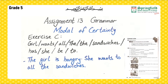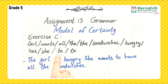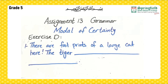Exercise C: Unscramble and write two sentences for each picture. First example — scrambled: 'girl wants all the sandwiches hungry has she be too.' Unscrambled: 'The girl is hungry. She wants to have all the sandwiches.' Check the context to decide whether to use 'has' or 'have.' Do the whole exercise the same way.